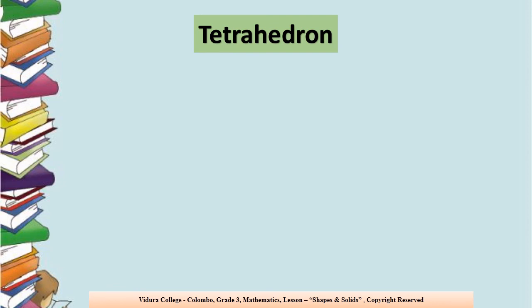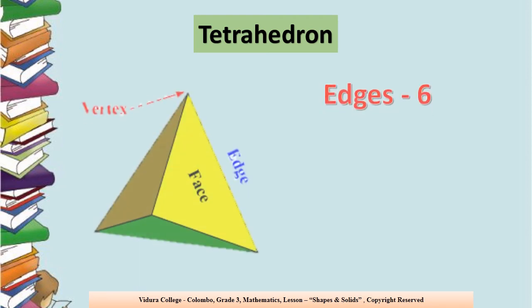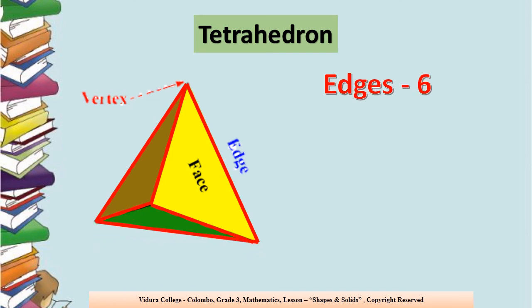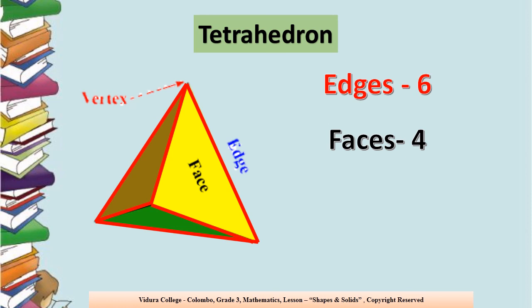Tetrahedron. How many edges are there in the tetrahedron? There are 6 edges — let's count: 1, 2, 3, 4, 5, 6. And how many faces are there? There are 4 faces: 1, 2, 3, 4. And how many vertices — how many corners are there? There are 4 corners: 1, 2, 3, 4. In another way, we can say 4 vertices.